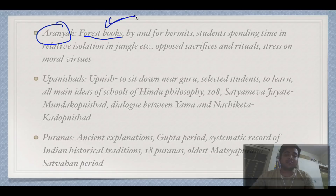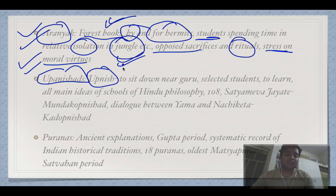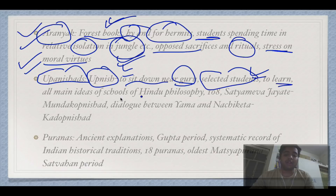Aranyakas means 'forest books'. They were written by and for hermits and students spending time in isolation, such as in the jungle. They opposed sacrifice and rituals and stressed on moral virtues. Then we have Upanishads. 'Upanish' literally means to sit down near the guru — only selected students were allowed to learn this way. All six Hindu philosophies are discussed in the Upanishads.